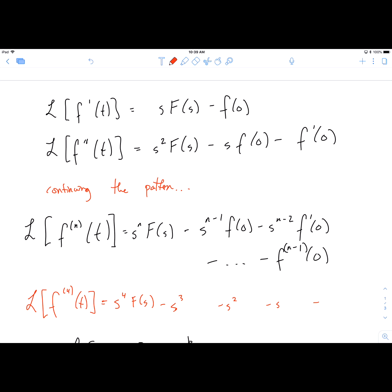After that, the first term has F of s on it. Then the next term starts with the initial value of f, and every term after that you take a higher derivative. So we have f of 0 first, then f prime of 0, then f double prime of 0, then f triple prime of 0. That ends the pattern.